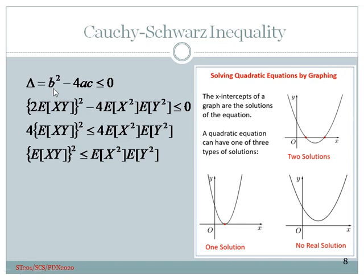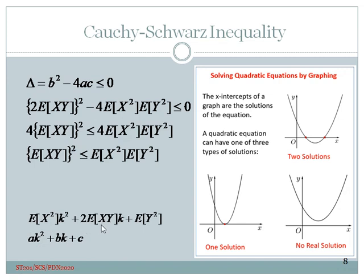By substituting the values a = E[x²], b = 2·E[xy], and c = E[y²] into the discriminant condition, we obtain the discriminant expression. Therefore, substituting a, b, and c into the inequality, we arrive at (E[xy])² ≤ E[x²] · E[y²], which is exactly the Cauchy-Schwarz inequality.